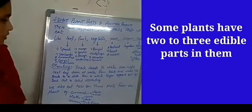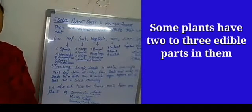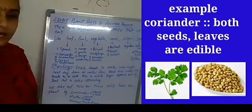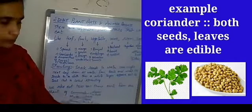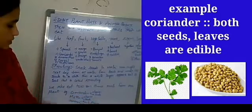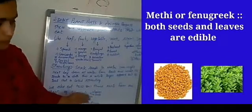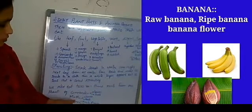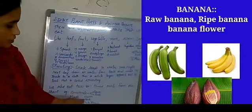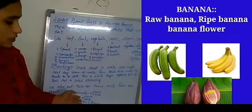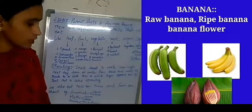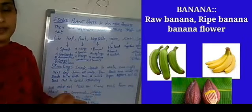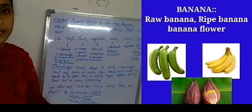Please know that there are many plants from which we can eat two to three parts. For example, the coriander plant — you can consume coriander leaves and also eat coriander seeds. Methi — you can eat methi leaves as well as methi seeds. Similarly, banana: you can take ripe banana as a fruit, raw banana as a vegetable cooked into curry, and also banana flower cooked into curry. These are all the different plant parts that are edible.